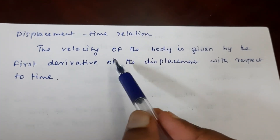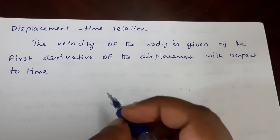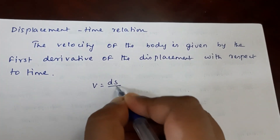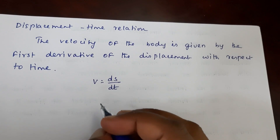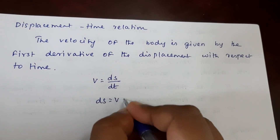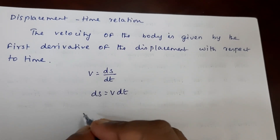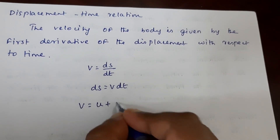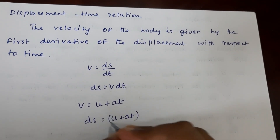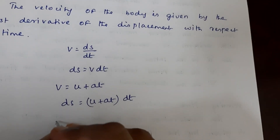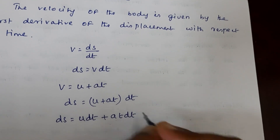Displacement-time relation. The velocity of the body is given by the first derivative of displacement with respect to time, so we can write velocity is equal to ds by dt — velocity is the rate of change of displacement. Now we can write ds is equal to v dt. Substituting v equal to u plus at, we get ds is equal to u plus at into dt, which can be written as ds equal to u dt plus at dt.